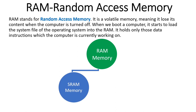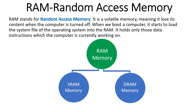RAM is of two types: Static RAM and Dynamic RAM. Static RAM does not need to be re-energized and is faster than Dynamic RAM. However, Dynamic RAM needs to be re-energized or refreshed periodically and is slower than Static RAM. Dynamic RAM is commonly referred to simply as RAM.